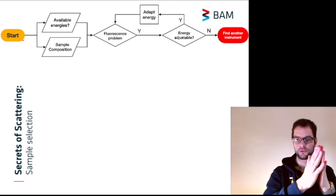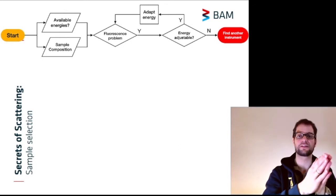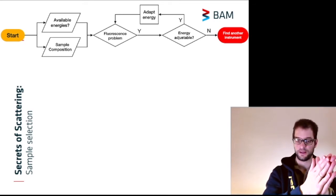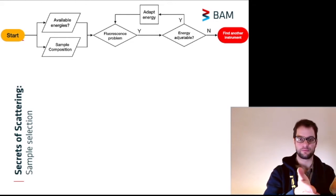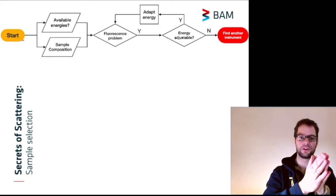For elements like that, it might be useful to switch to a different energy. If that's possible, change the energy and check if the fluorescence is a problem again then. If you cannot adjust the energy and fluorescence is a problem for you, then find another instrument. There are beamlines available where you can freely select or almost freely select energy that you need for your experiment.